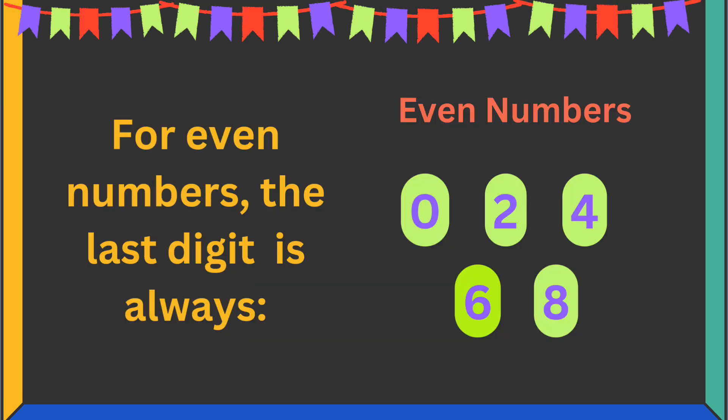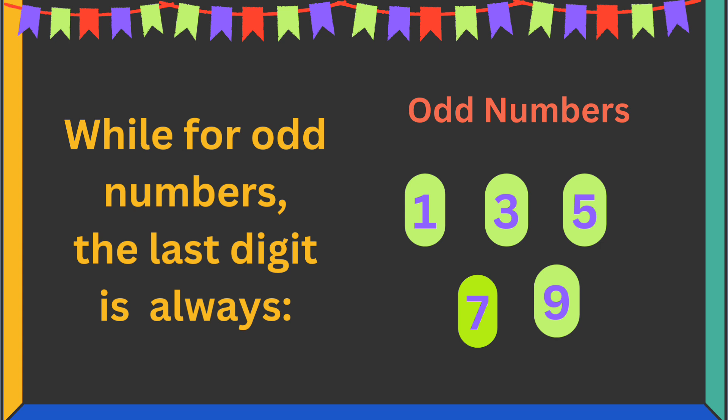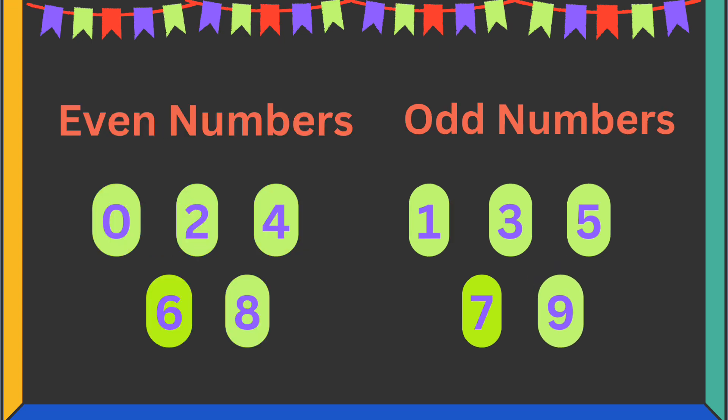For even numbers, the last digit is always 0, 2, 4, 6, or 8, while for odd numbers, the last digit is always 1, 3, 5, 7, or 9. Learning this simple trick will help you tell apart even and odd numbers.